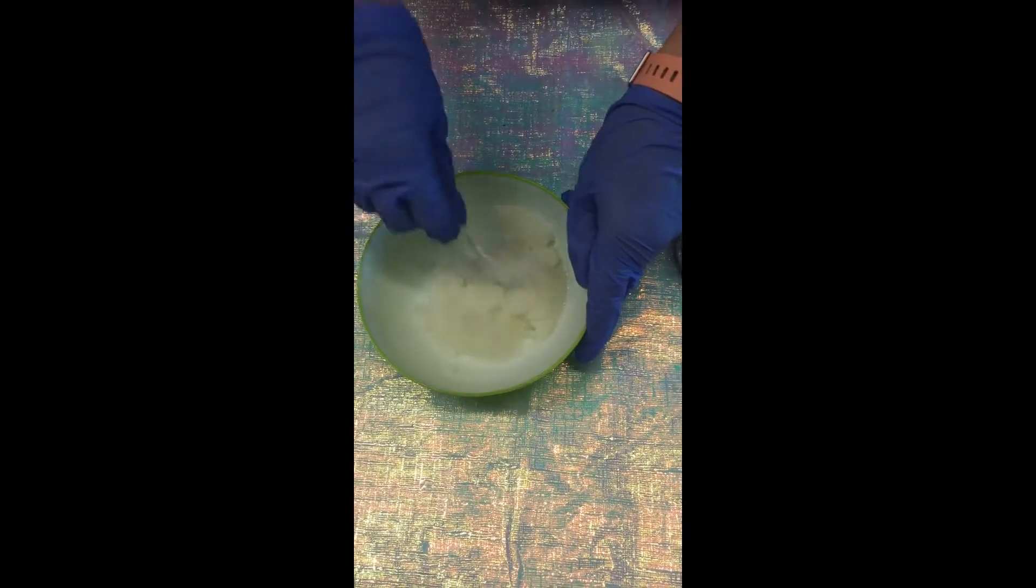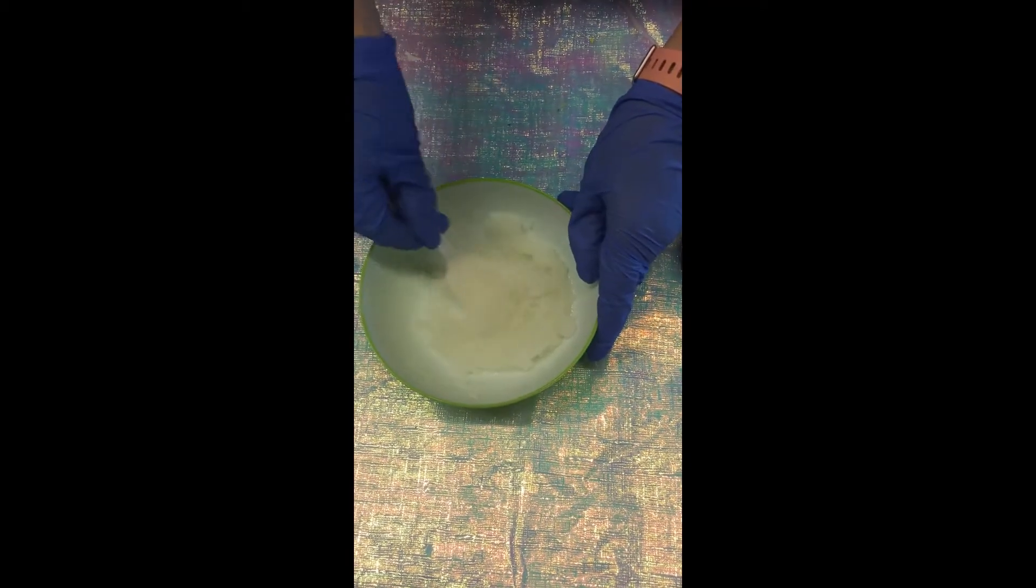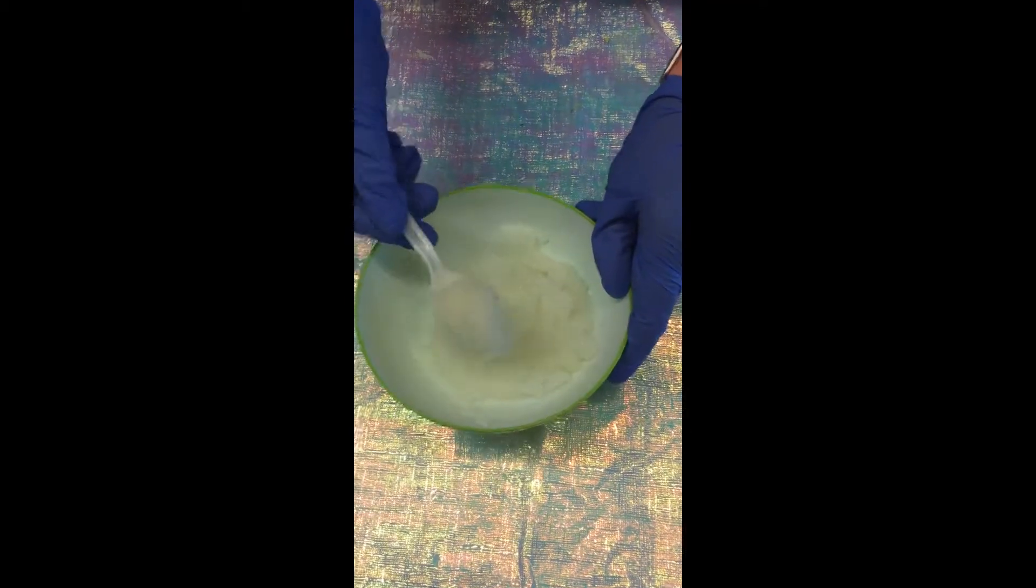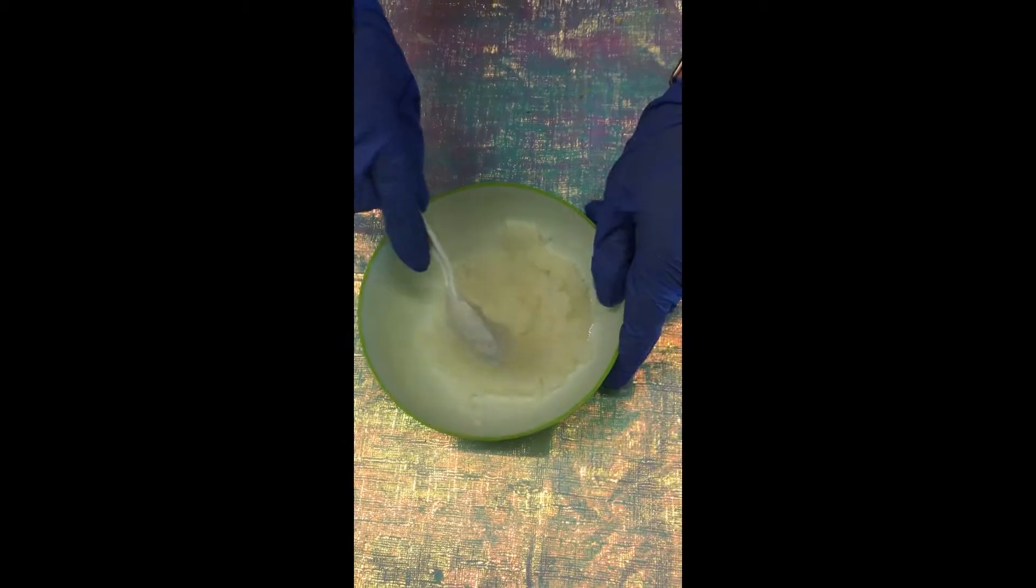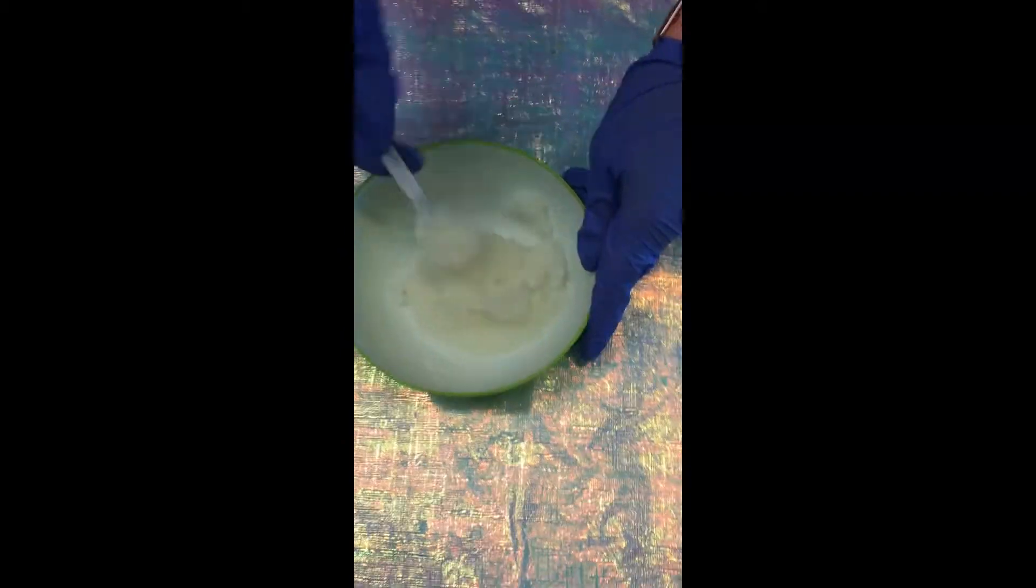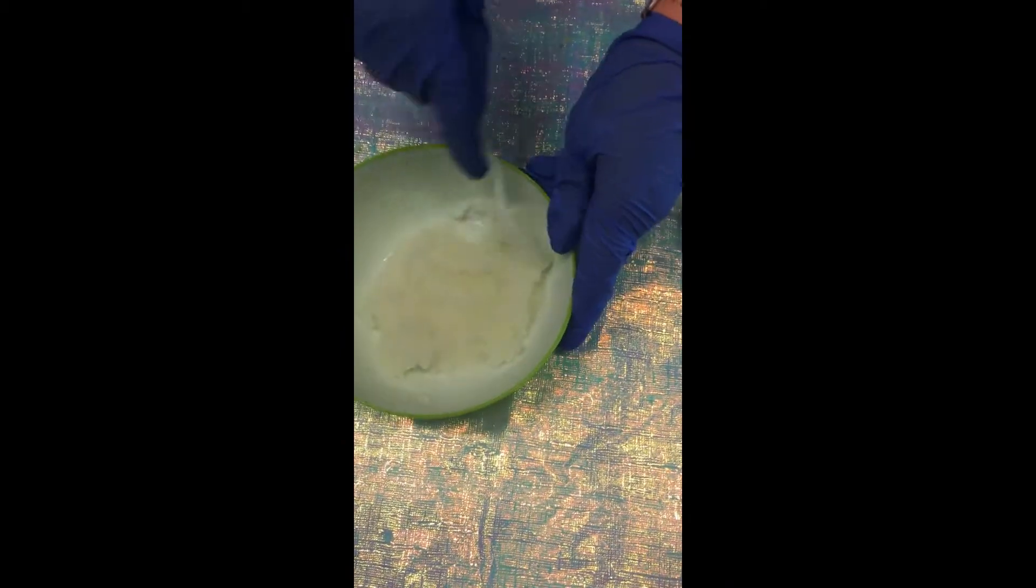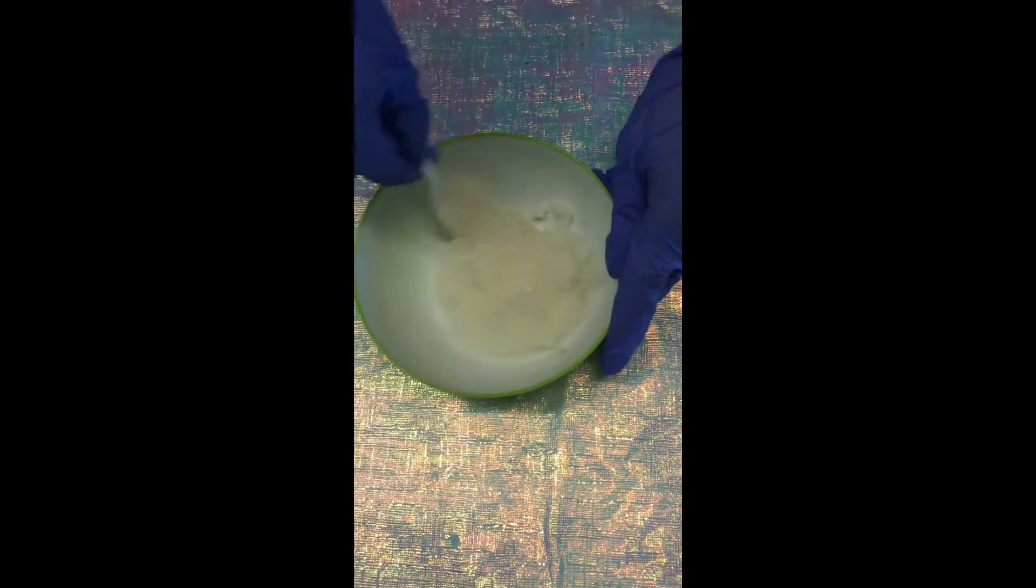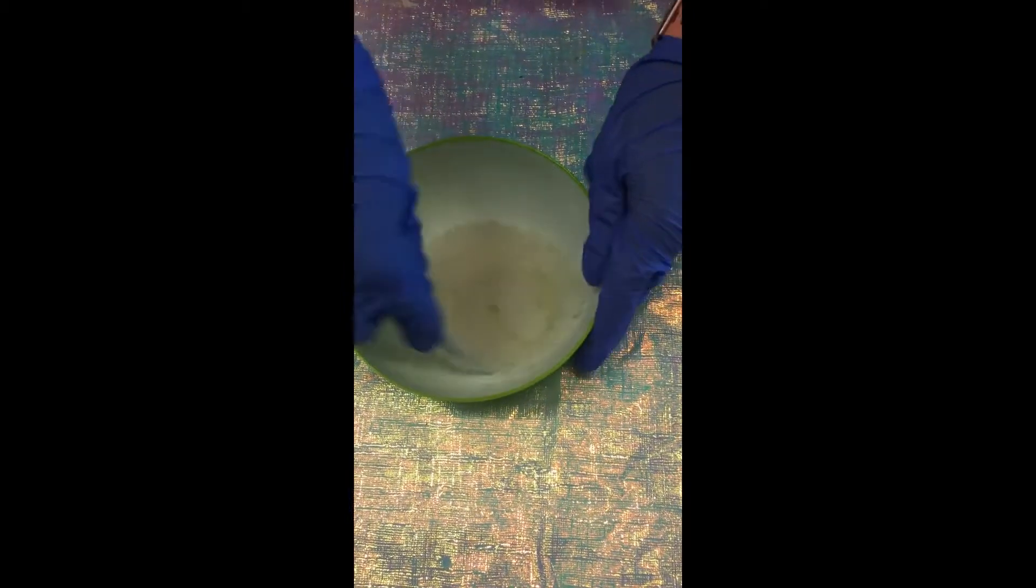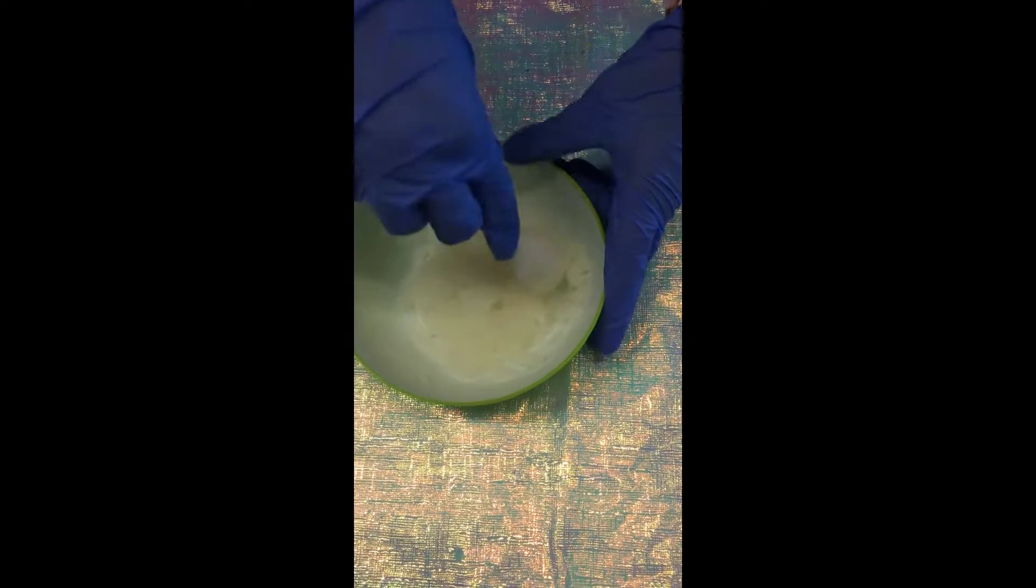So when you mix that together it's going to make almost like a crunchy snow, like a snow cream type texture, and that sugar is really going to help get off old and dead dry skin and it's going to leave your hands feeling silky smooth.